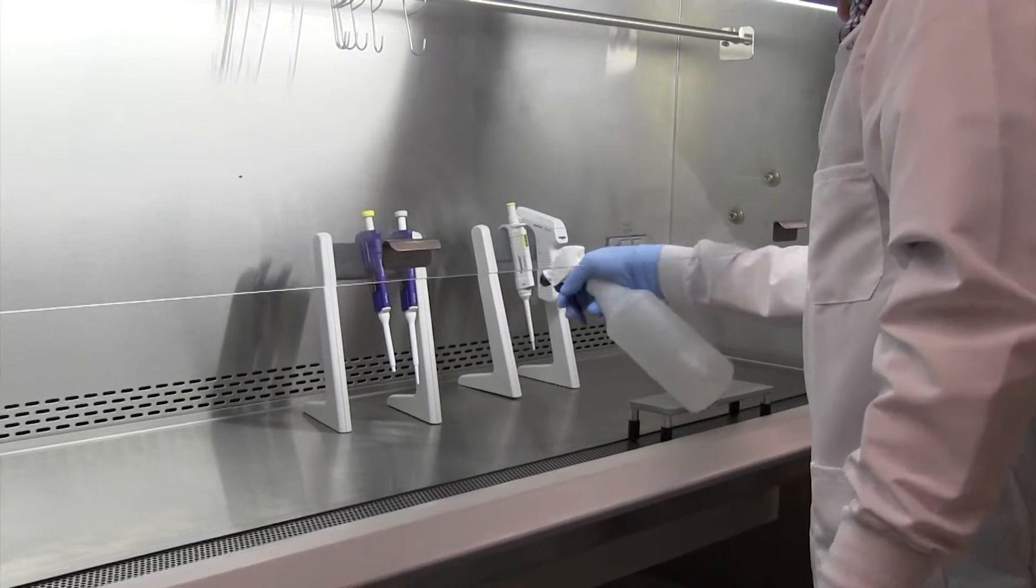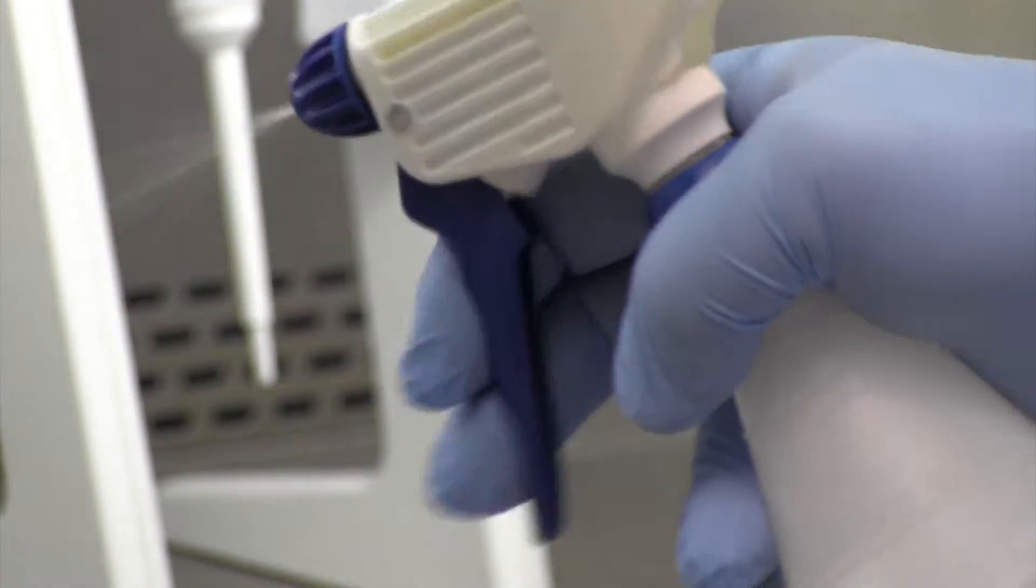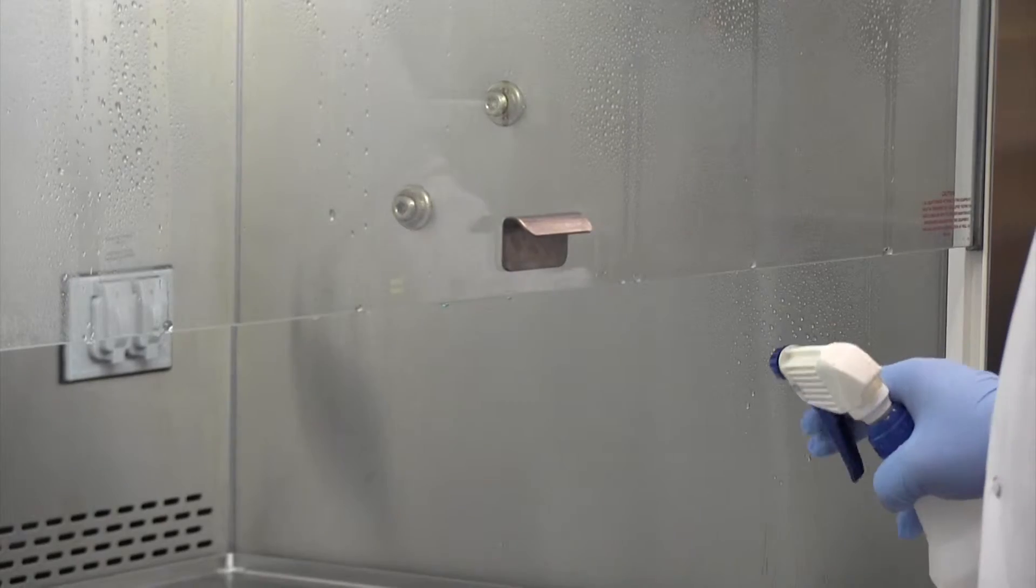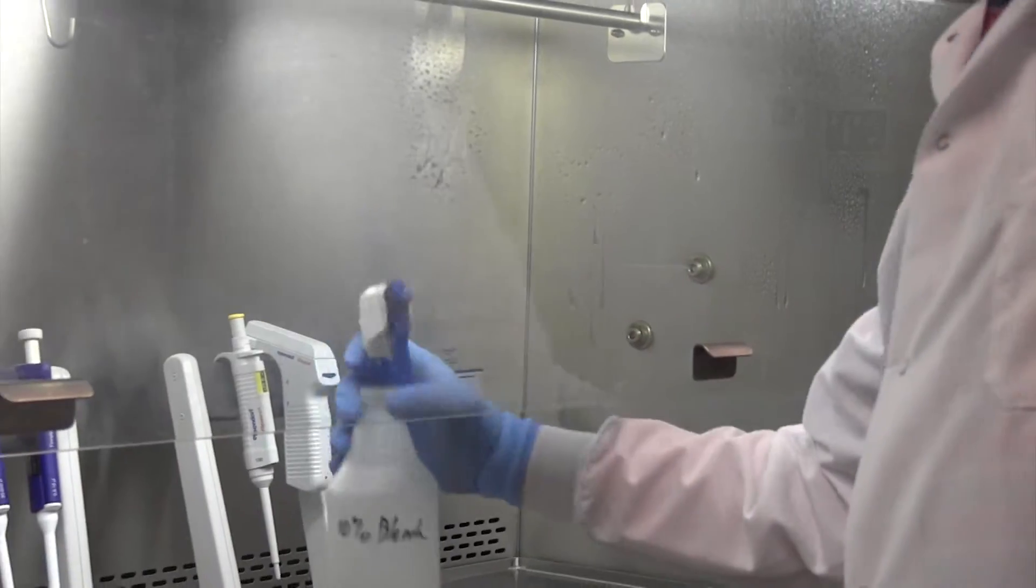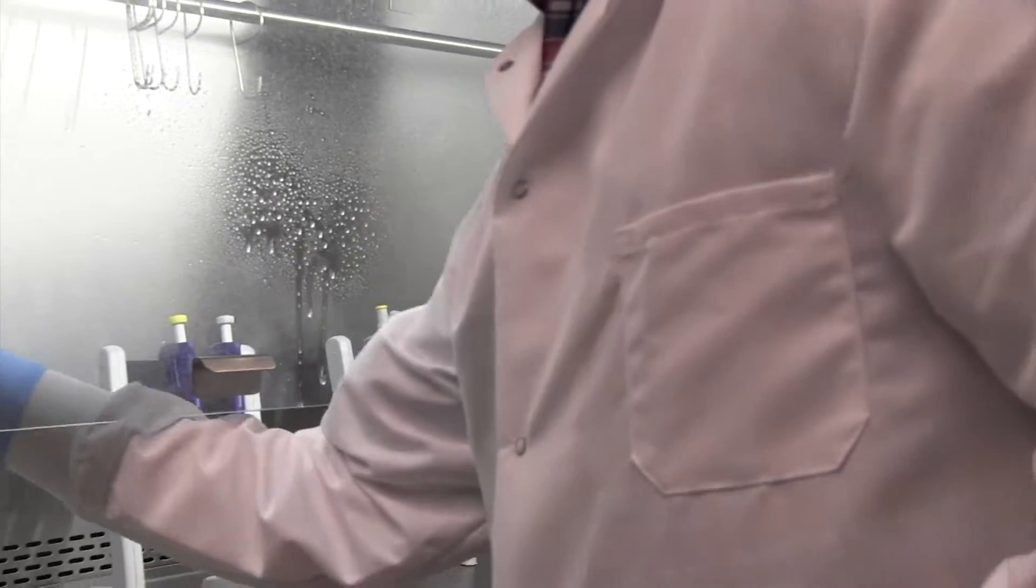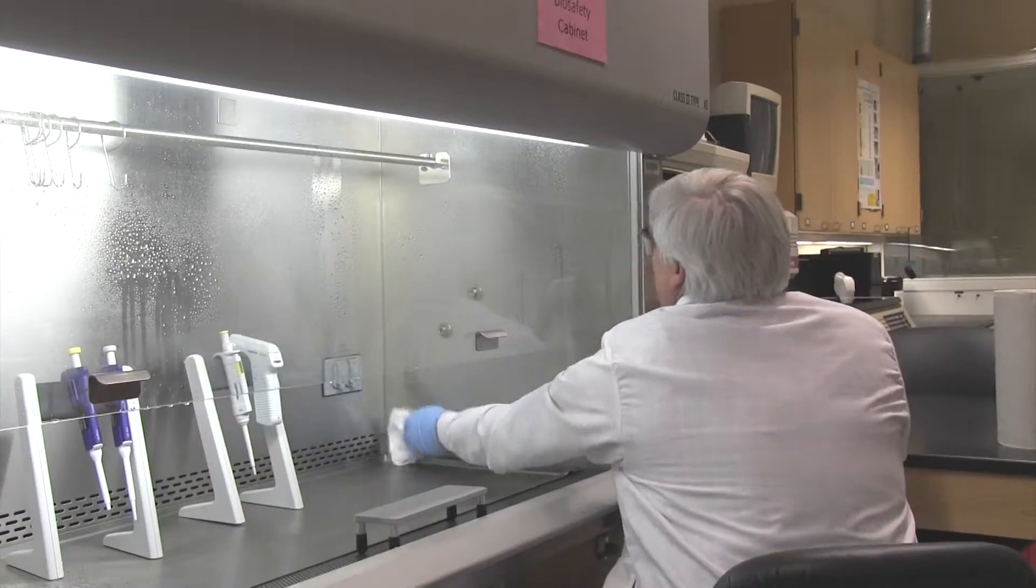Decontaminate the inside surfaces of the biosafety cabinet. Spray the work surfaces, side walls, and the inside of the front sash with disinfectant. Allow for the appropriate contact time for the disinfectant you are using.